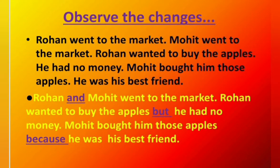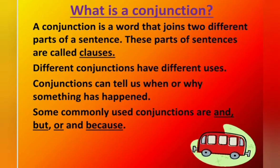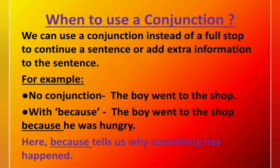Now, let me tell you what is a conjunction. A conjunction is a word that joins two different parts of a sentence. These parts of sentences are called clauses. Different conjunctions have different uses. Conjunctions can tell us when or why something has happened. Some commonly used conjunctions are and, but, or, and because. Now, let us understand when to use a conjunction. We can use a conjunction instead of a full stop to continue a sentence or add extra information to the sentence.